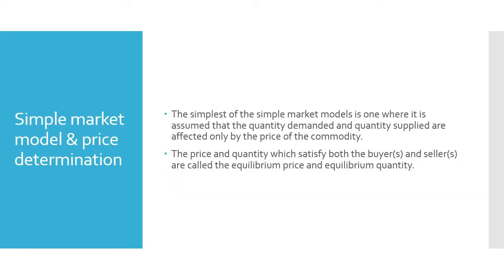Next we will look at the simple market model and price determination. The simplest market model assumes that the quantity demanded and quantity supplied are affected only by the price of the commodity. The price and quantity which satisfy both buyers and sellers are called the equilibrium price and equilibrium quantity.